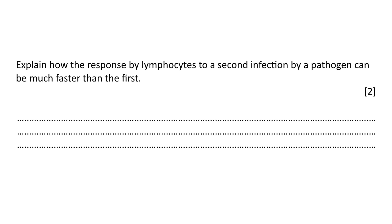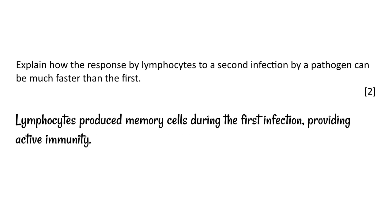Let's look at a little bit of exam help, something you may get asked on this. Explain how the response by lymphocytes to a second infection by a pathogen can be much faster than the first. This is dead easy. Lymphocytes produce memory cells and they produce them during the first infection. And this provides something called active immunity. So there we've given three marking points and you only need to get two. So nice and easy.